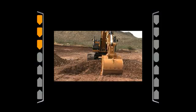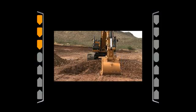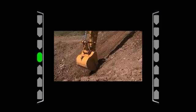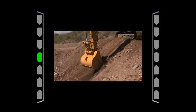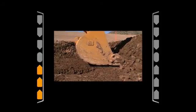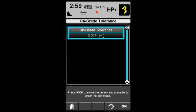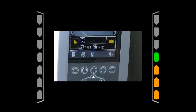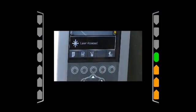The left light bar indicates above grade, on grade, or below grade. The scale can be changed within the on-grade tolerance screen. The right light bar aids in locating a laser signal when using the laser reference.